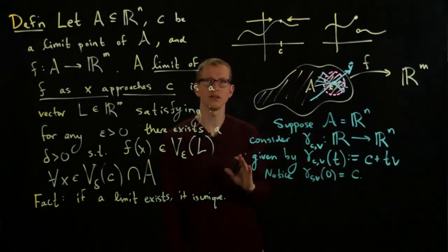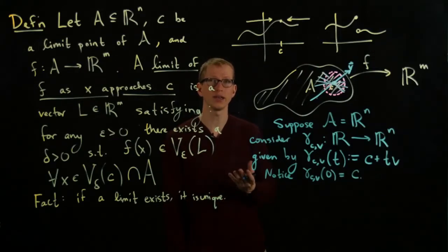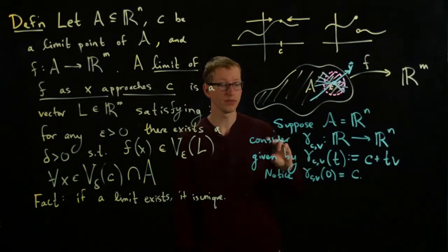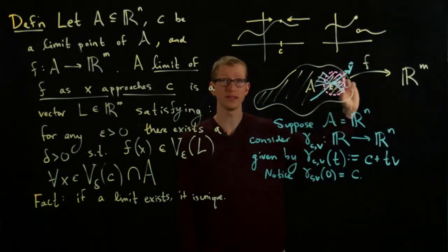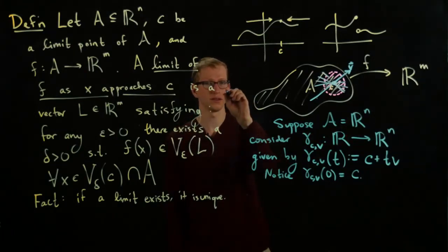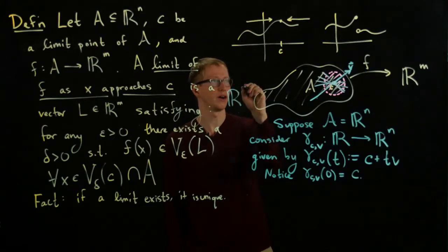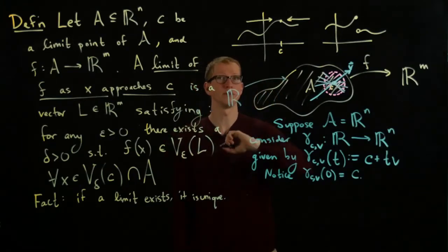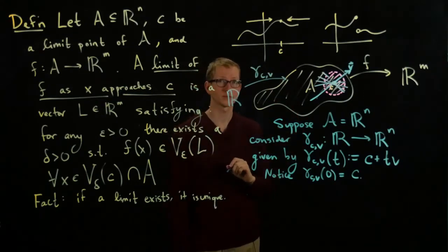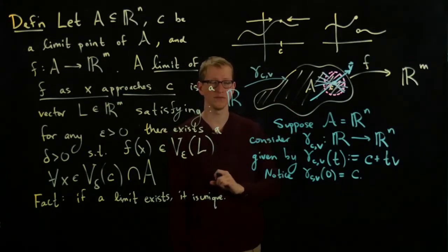So notice gamma_C,V at 0 equals C. So then, now that we have this line, we can say, okay, well, it makes sense to take the limit of the pre-composition of this path with this function. So we can consider, here's R now, and R gives us one of these paths, gamma_C,V. And we can look at the composition of these two functions.